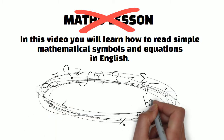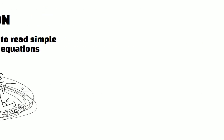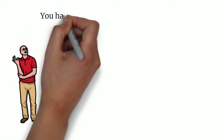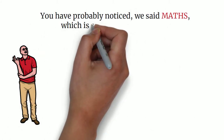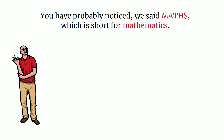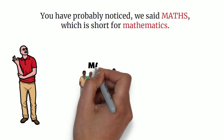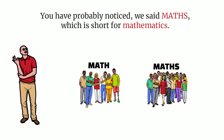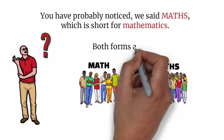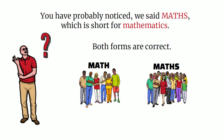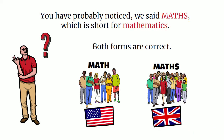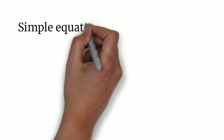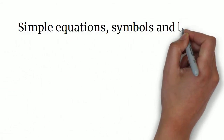Before we start, we would like to explain something you have probably noticed: we said 'maths' as a short form for mathematics. You may wonder why other people say 'math' as opposed to 'maths' and not know which one is correct. Be assured that both forms are correct — however, 'math' is more common in American English and 'maths' is used in British English. Okay, so let's go.